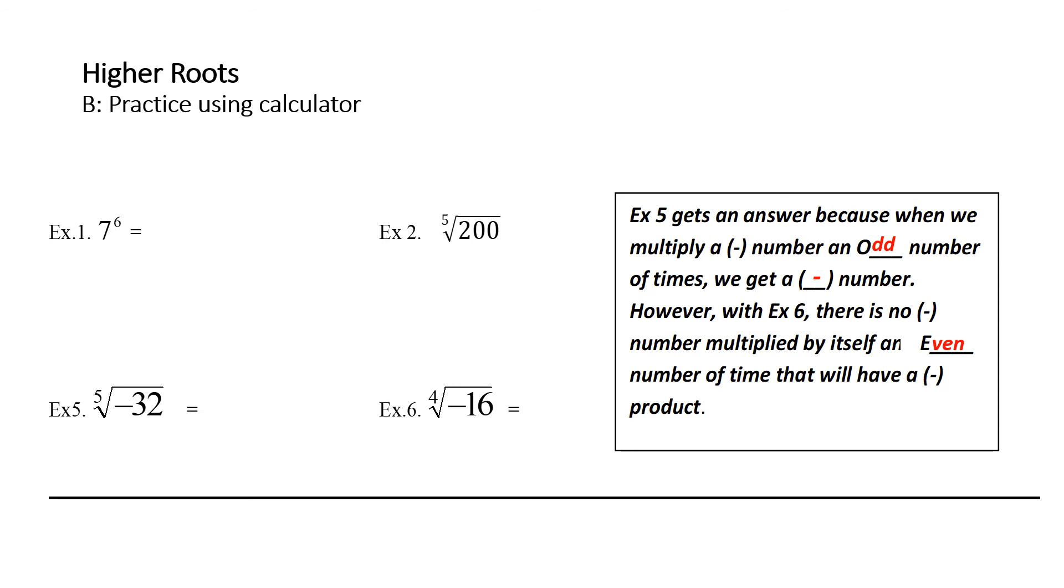Try these questions, and I will do them in a minute. So stop the tape now. Okay. So, 7 to the 6th, you should have gotten 117,649. The 5th root of 200, or what number multiplied by itself 5 times equals 200? Well, I punch that into my calculator and I get a long decimal because it is an irrational number. So what I'm going to do is round it off to a rational number. So I'm going to round that to 2.9.